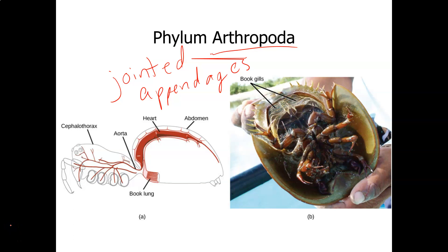This is part three of the invertebrate lectures. The slide before this was the phylum Nematoda, otherwise known as the roundworms. Those were ecdysozoans, meaning they shed their exoskeletons — or more precisely, their cuticle — periodically. Arthropods are also in that group, the ecdysozoans.